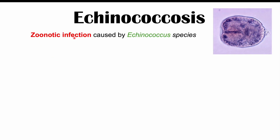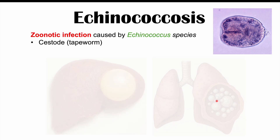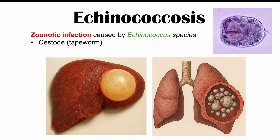Echinococcosis is a zoonotic infection, meaning it comes from animals, and it's caused by echinococcus species. Echinococcus is a cestode or a tapeworm, and infection with echinococcus tapeworms is not going to be like other tapeworm infections where a tapeworm would stay in the gastrointestinal system. Echinococcus tapeworms can infect other parts of the body, spreading throughout and causing cysts in the liver, lungs, and in some cases the brain.